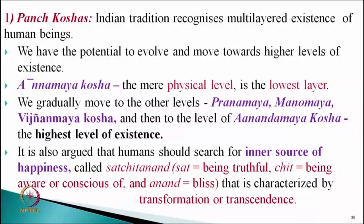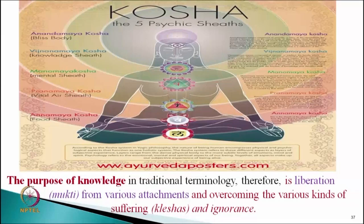First is Panchakoshas. Indian tradition recognizes the multi-layered existence of human beings. We have the potential to evolve and move towards higher levels of existence through koshas. Our basic level is the physical kosha — annamayakosha. Then we gradually move to pranamayakosha, then manomayakosha, then vijnanamayakosha, and then to the level of anandamayakosha — the highest level of existence. These correspond to food body, vital air body, mental body, knowledge body, and bliss body.